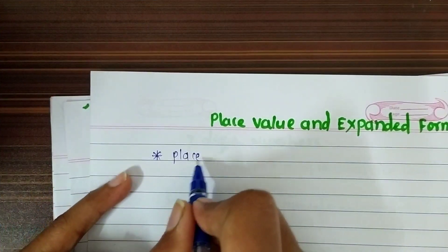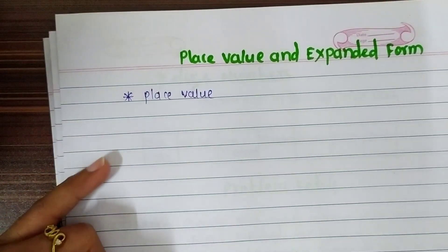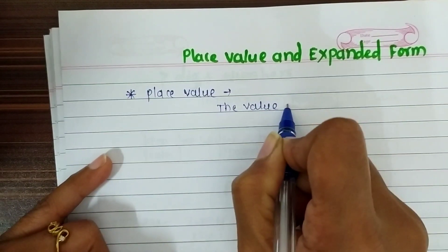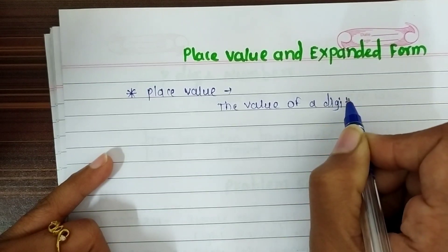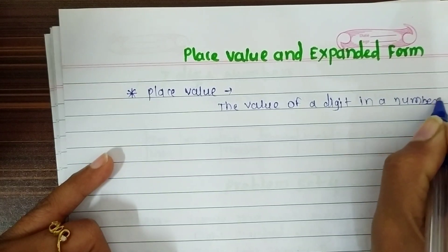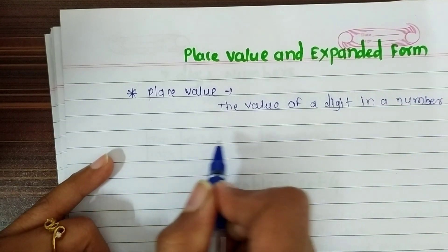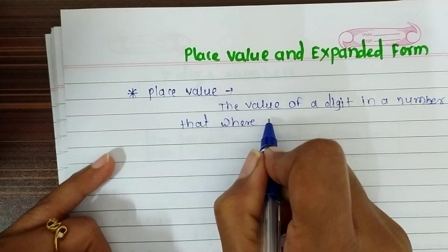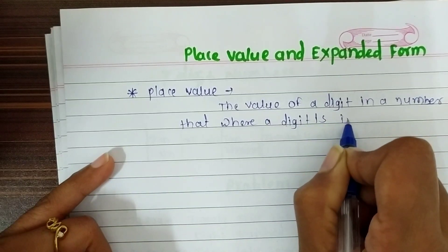First, let's see about place value. What is the place value? The value of a digit in a number — that is, where a digit is in the number.